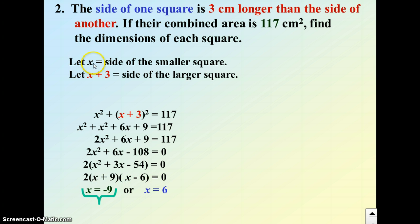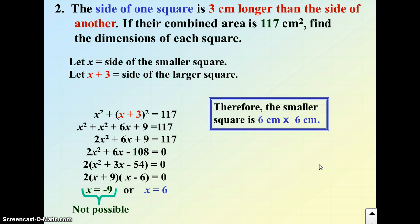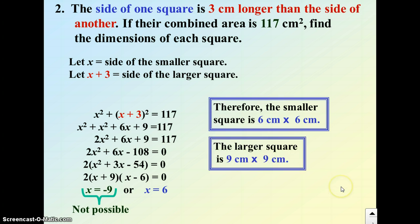Again, we've got two solutions. When I use negative 9, that doesn't make sense, having a side length of negative 9. So the only solution that makes sense is a side length of 6. So the smaller square has a side length of 6. The larger square has a side length of 6 plus 3, or 9 centimeters.